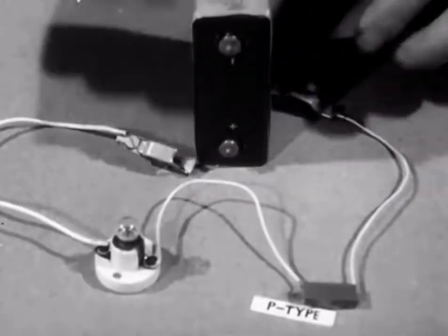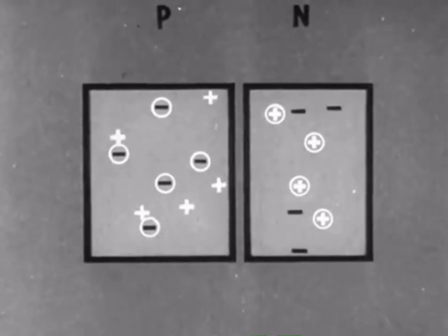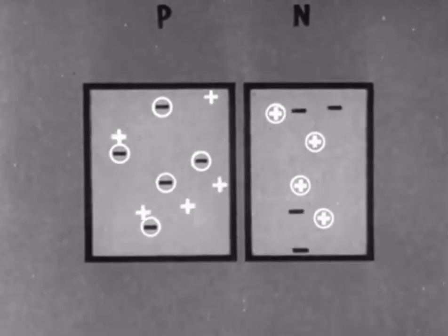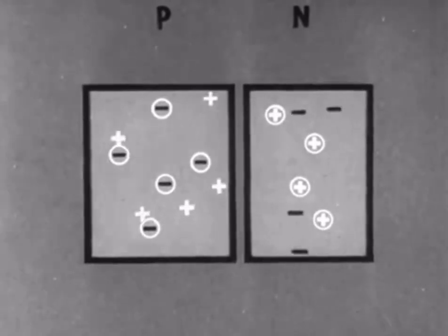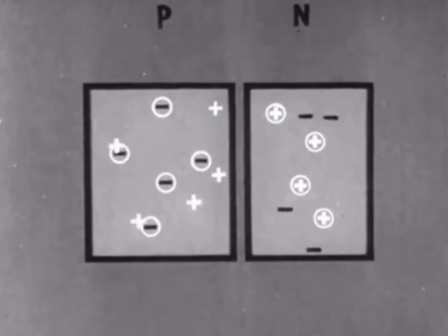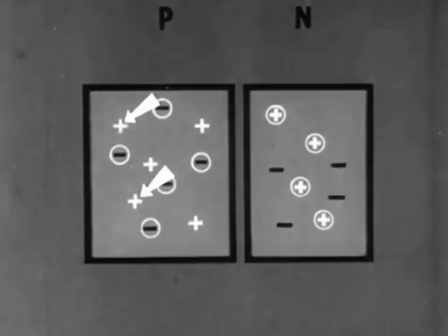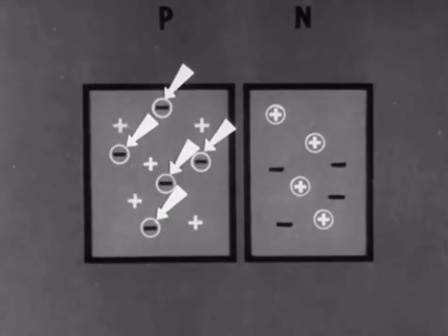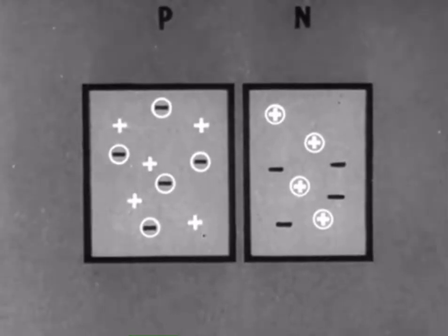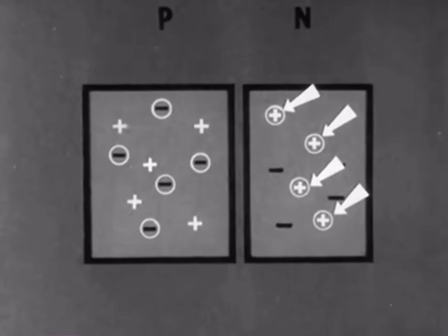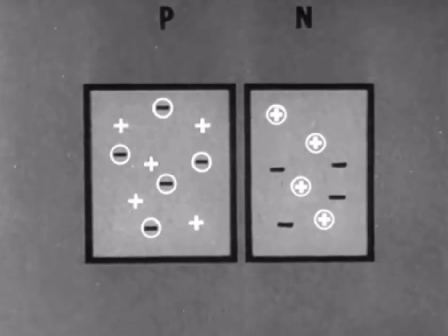Now let us look at a diagram of a piece of P-type and a piece of N-type germanium side by side. Without any battery being connected, the positive carriers in the P-type and negative carriers in the N-type will move about at random. If we stop the movement, we can see that in the P-type germanium on the left, there will be an equal number of positive carriers and stationary acceptor atoms. Similarly, in the N-type germanium, there will be an equal number of negative carriers and stationary donor atoms. Both pieces of germanium are therefore electrically neutral.